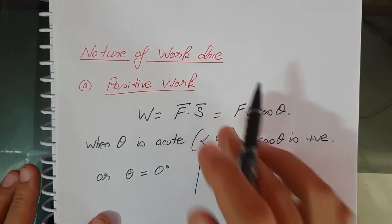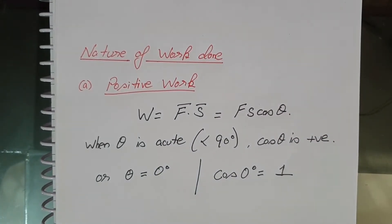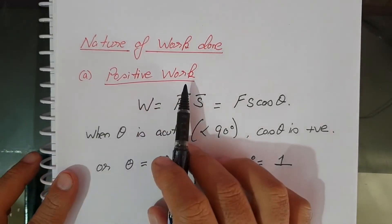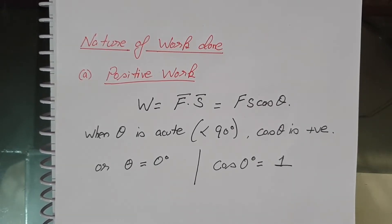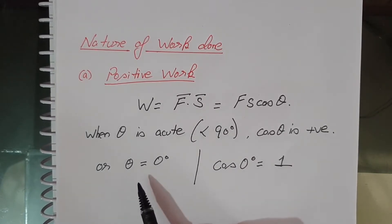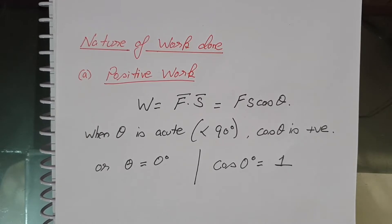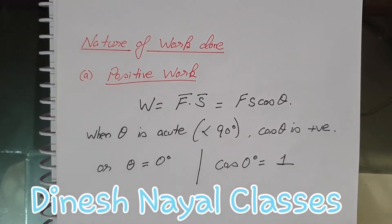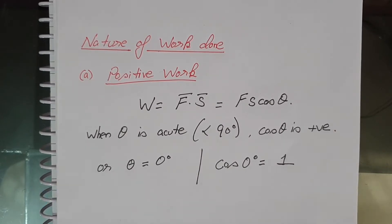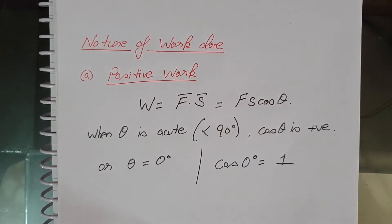Nature of work done: although work done is a scalar quantity, its value may be positive, negative, or even zero. For positive work, W = Fs cosθ. The condition is that when theta is acute — less than 90 degrees — cosθ is positive, or theta equals zero degrees when force and displacement are in the same direction. For example, when a body falls freely under gravity, theta is zero degrees, so work done by gravity is positive. Similarly, when a lawn roller is pulled along the handle at an acute angle, work done by the applied force is positive.